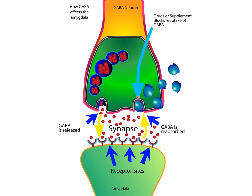There are some drugs and oral supplements that, when taken, block the reuptake of GABA, thereby effectively increasing the GABA concentration in the synapse. When you increase GABA concentration by blocking the reuptake pump, there is more GABA in the synapse and therefore more binding of GABA to the postsynaptic receptors. This results in more opening of ion channels, which increases inhibition of the amygdala and therefore decreases anxiety even more.